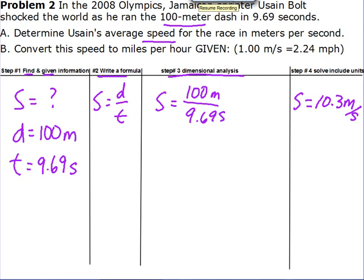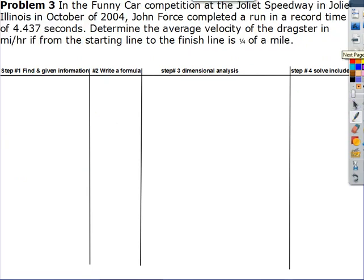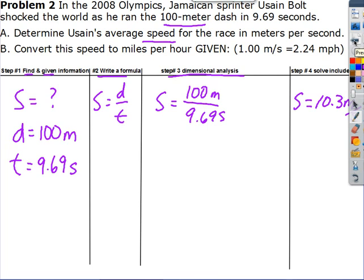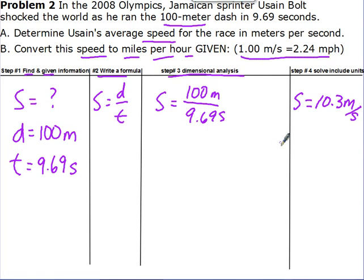It's important that you get these examples down and the format we're going to use, because this is the format expected on all examples as well as the test. What I forgot to do was convert — the second part. I need to convert to miles per hour. The original unit was meters per second. It tells me that one meter per second equals 2.24 miles per hour.